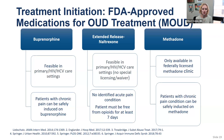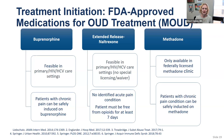Extended-release naltrexone is feasible in primary care settings. It is an antagonist, so patients must be free from opioids for at least seven days before starting. Methadone is only available in federally licensed clinics. Patients with chronic pain can be safely induced on methadone in the hospital setting, but there are policy and practical restrictions on transitioning to outpatient methadone care — unlike buprenorphine and naltrexone, methadone cannot be delivered in routine primary care settings under current U.S. policy.